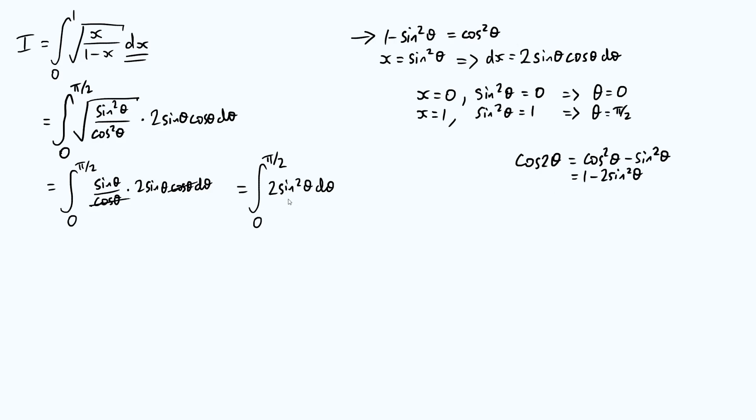and therefore 2 sine squared theta, which is our integrand, is the same as 1 minus cos 2 theta. And so what we're doing is integrating from 0 to pi over 2, just 1 minus cos of 2 theta with respect to theta.